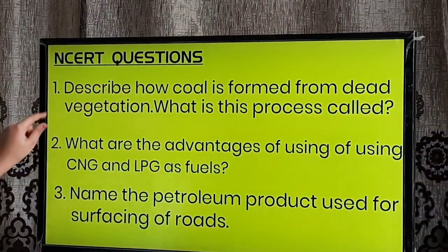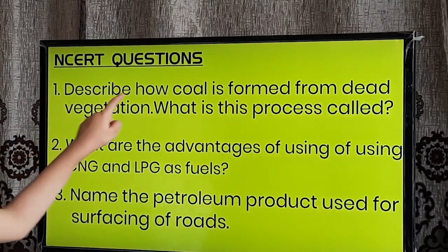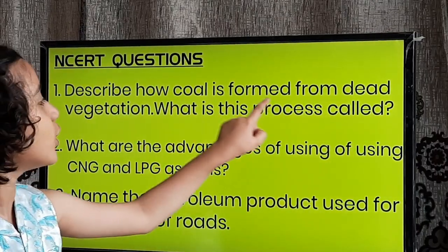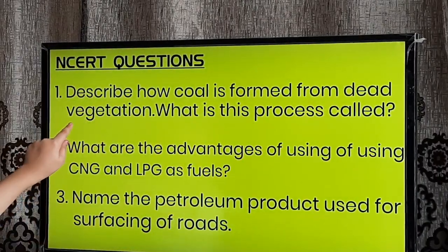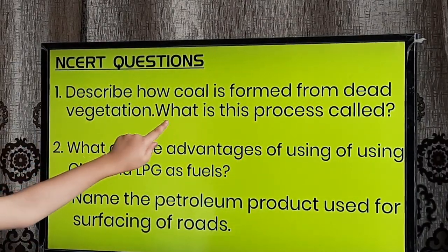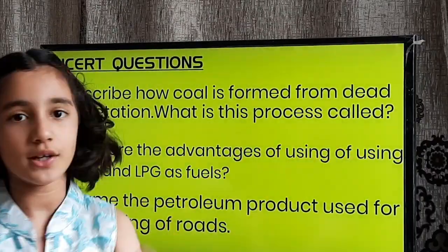NCERT questions. Question number 1: Describe how coal is formed from dead vegetation. What is this process called?